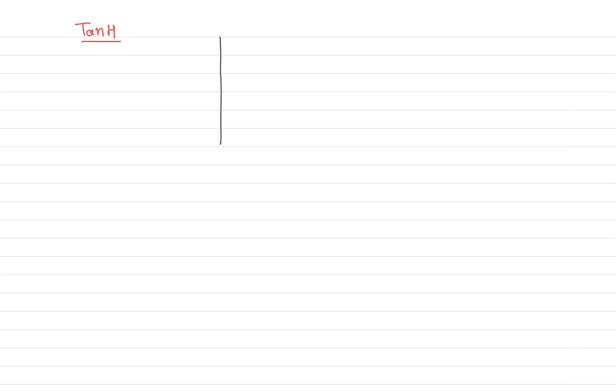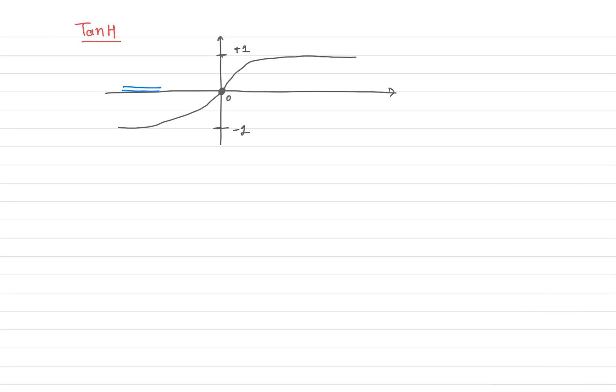This brings us to tanh, which is similar to sigmoid but is zero-centered — for zero input it produces zero output. For large positive input it produces +1, and for large negative input it produces -1. So the tanh curve goes from -1 to +1, passing through 0, unlike sigmoid which goes from 0 to 1 passing through 0.5.